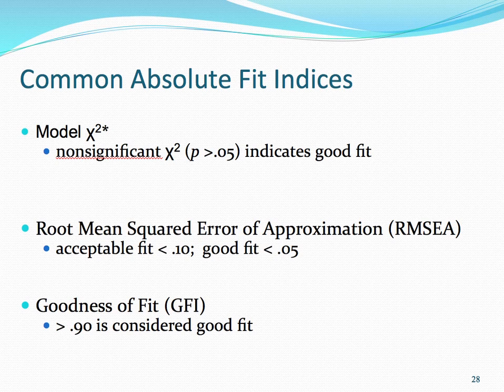The model chi-squared tests the hypothesis that the observed and the implied covariance matrices are equal. A non-significant chi-squared value, so a p-value greater than 0.05, indicates a good fitting model, suggesting few discrepancies between observed and implied covariance matrices. However, the model chi-squared is sensitive to sample size. With large samples, we can often detect small differences between the sample and the population. Therefore, it tends to show good fit in small samples and bad fit in large samples, even with the same covariance matrix.